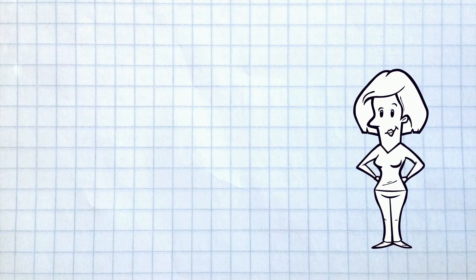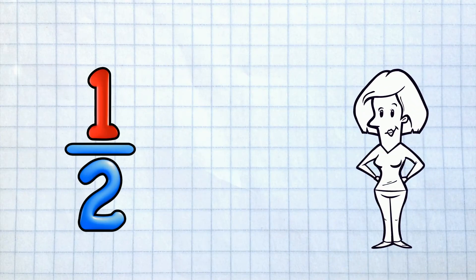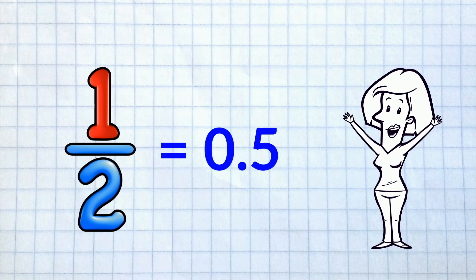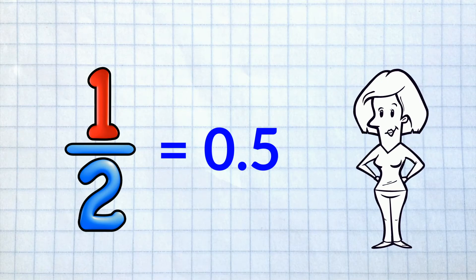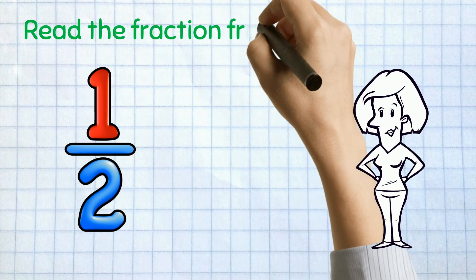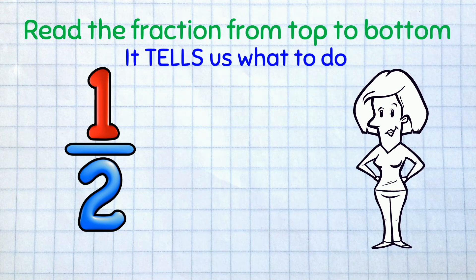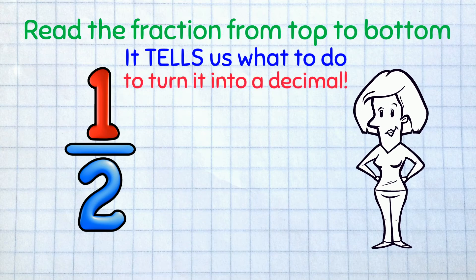I'm going to show you the method with an easy one: 1 half! We already know as a decimal this is 0.5, and I'm going to prove it with this new method. We can read the fraction from top to bottom. Then it actually tells us what to do to turn it into a decimal!